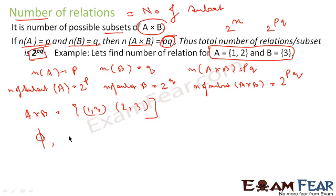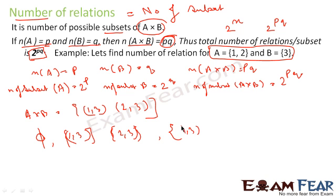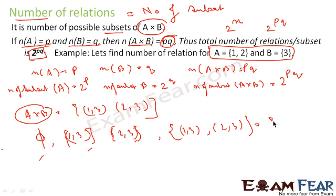The subsets of A cross B are: the empty set, {(1,3)}, {(2,3)}, and {(1,3),(2,3)}. So the subsets of A cross B are four in total. Since subsets are nothing but relations, the number of relations for A cross B is 4.